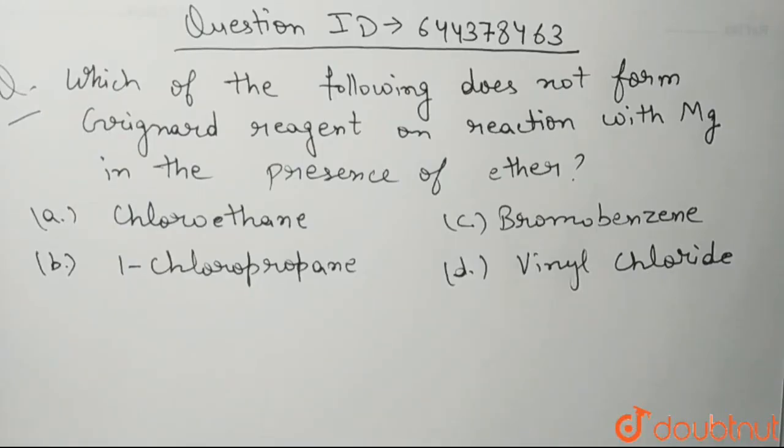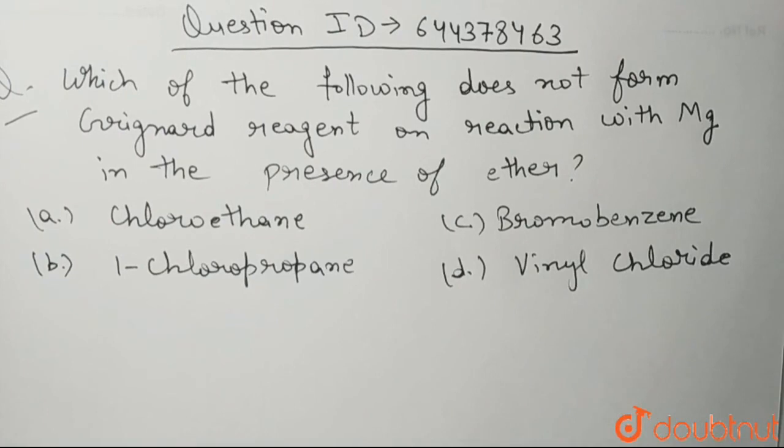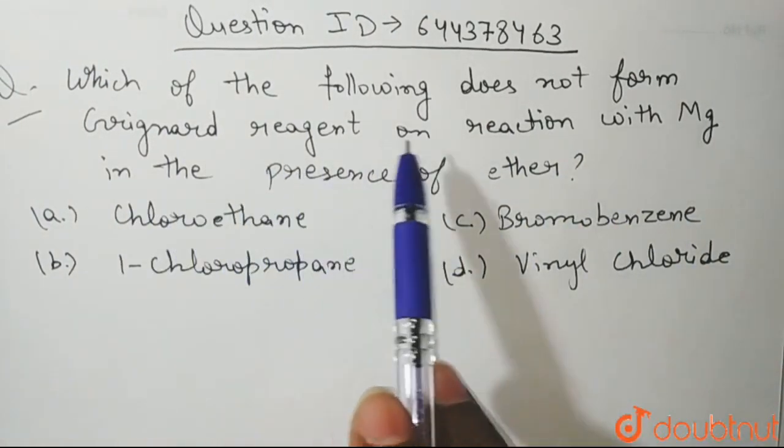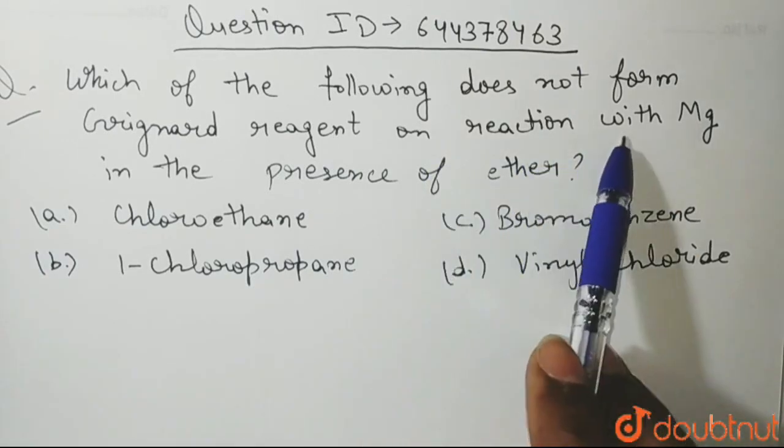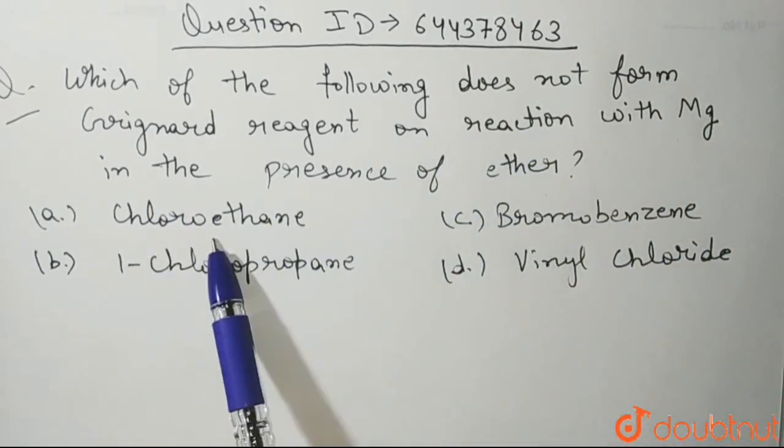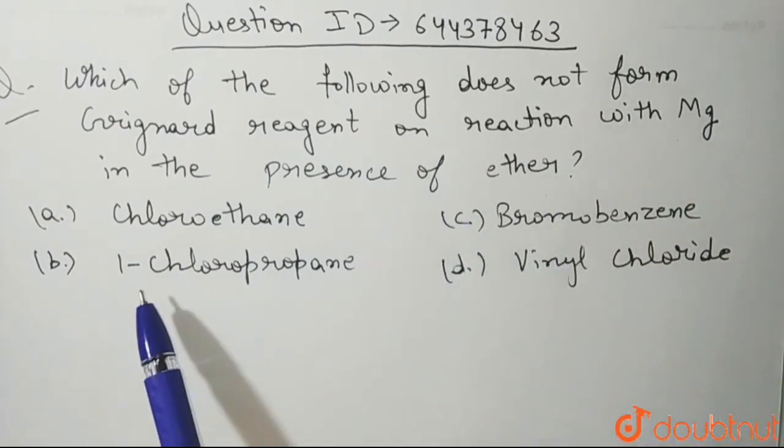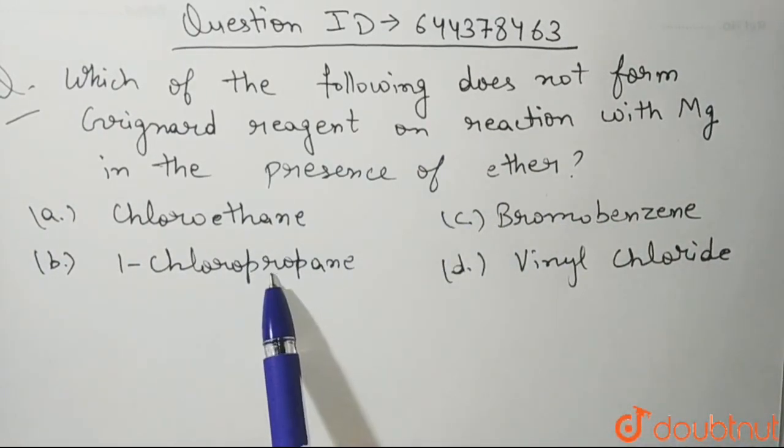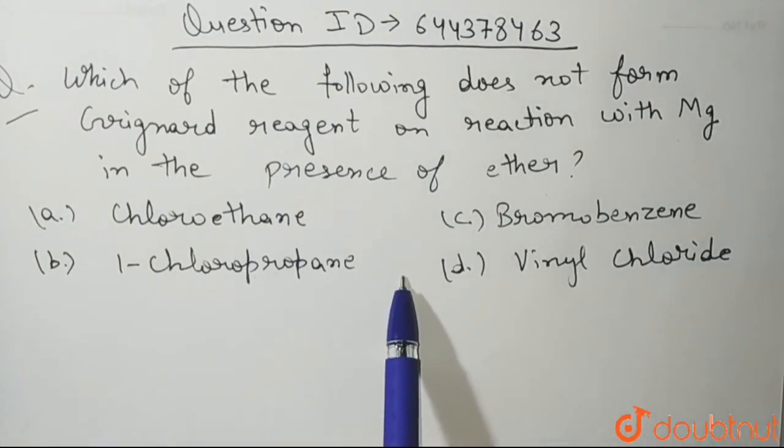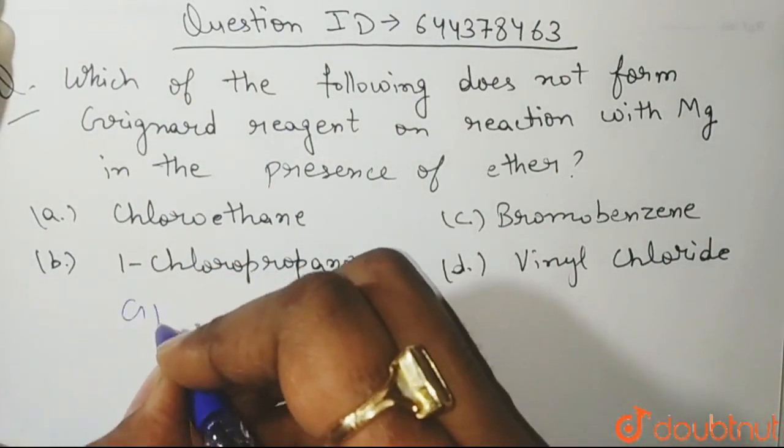Hello students, the question is: which of the following does not form Grignard reagent on reaction with magnesium in the presence of ether? Your options are A. Chloroethane, B. Bromobenzene, C. 1-Chloropropane and D. Vinyl chloride. So here in this question, what we need to tell is that out of all these four options, which one will not be able to form Grignard reagent?